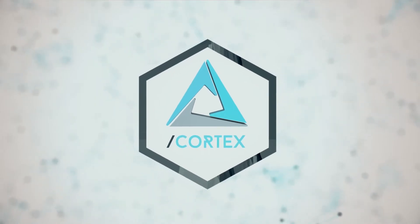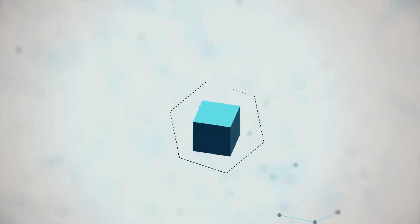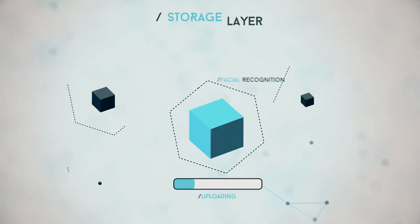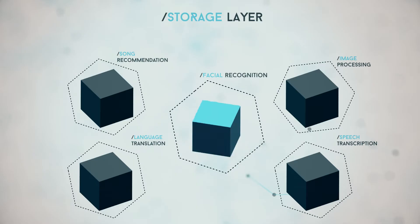How does Cortex do that? On the one hand, Cortex takes an AI model trained by AI developers and stores it on the storage layer of the Cortex blockchain.